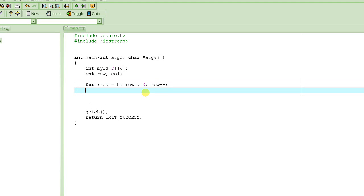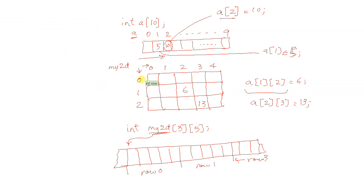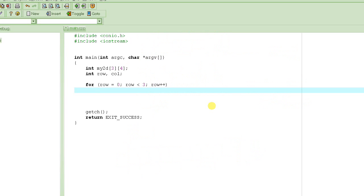So, for row is equal to 0, row is less than, how many rows do we have? 3. So, less than 3. In other words, the rows would be, the value of row would be 0, 1, and 2. Less than 3, not equal to 3. So, row will never be 3. So, row plus plus. And then, you have another loop for every row, you have to access each column, 0, 1, 2, 3, 4. And then, for row 1, you have to access 0, 1, 2, 3, 4. For row 2, you have to access 0, 1, 2, 3, 4.